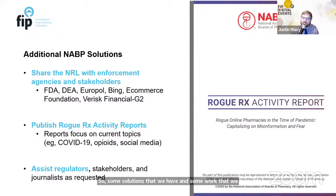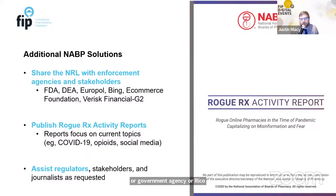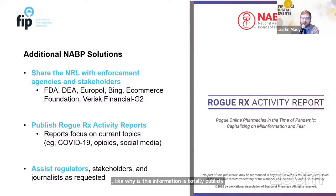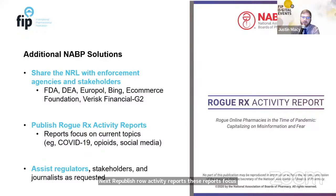For solutions that don't require active government agency involvement: NABP's Not Recommended List is shared with agencies and stakeholders — FDA, DEA, Europol, and Western Union among others — and is publicly available so any user can search a specific domain name. We publish ROGUE activity reports focusing on current topics such as COVID-19, opioids, and social media. We also assist regulators in figuring out where to turn for issues like this cross-border enforcement problem at the individual state level in the U.S.